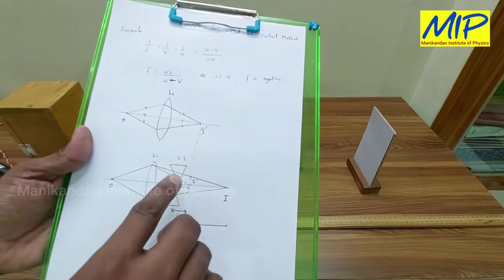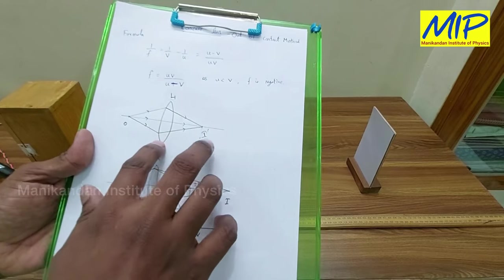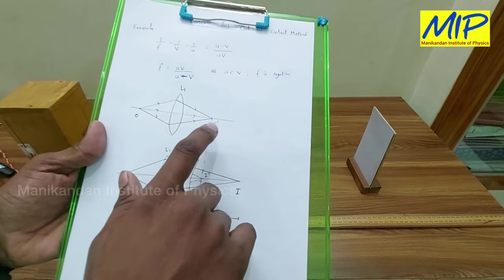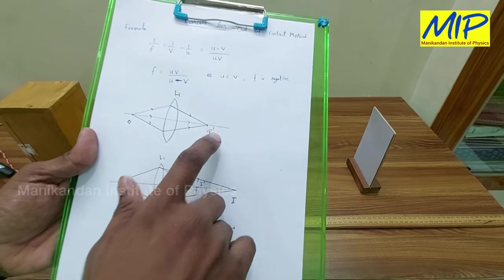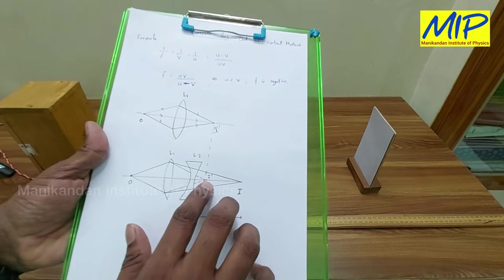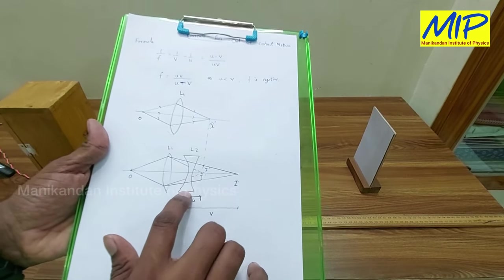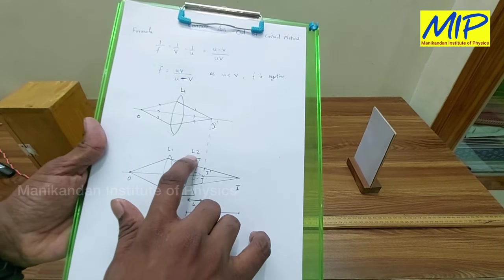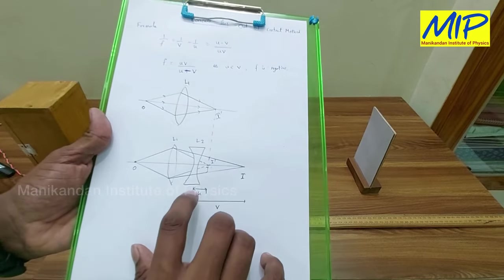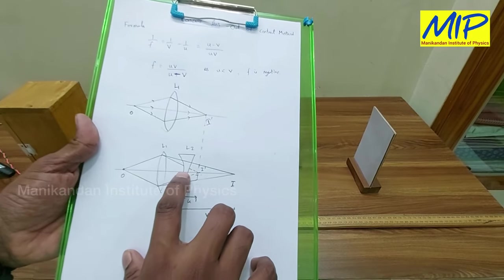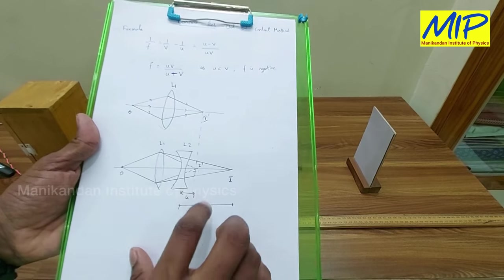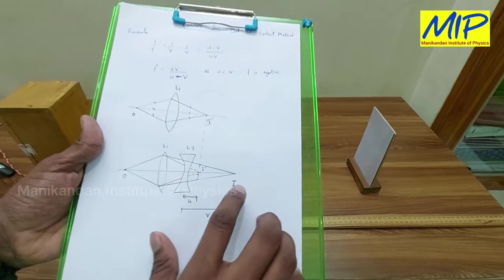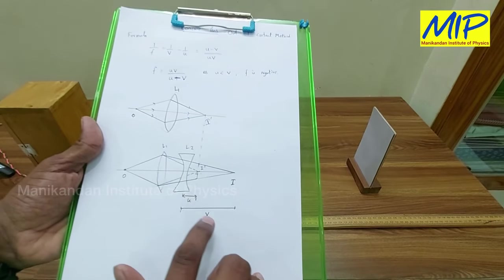I am going to introduce my concave lens between Lens 1 and the image it produced. The image I dash produced by the convex lens acts as a virtual object for Lens L2 (the concave lens). The final image produced by L2 is formed at point I. The distance from L2 to I dash is U, and the distance from L2 to I is V.